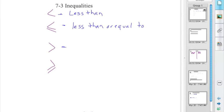So the third symbol down is greater than, and the fourth symbol, the final symbol, is greater than or equal to. So we have these four symbols that we're going to be working with at this point in time.